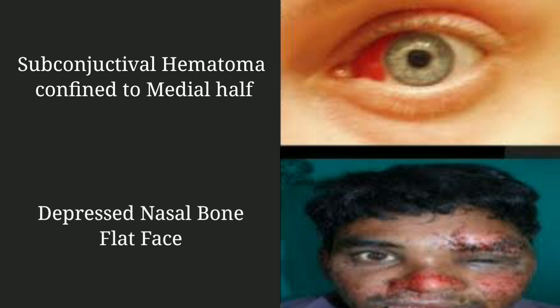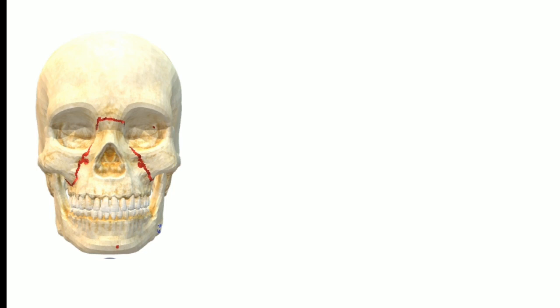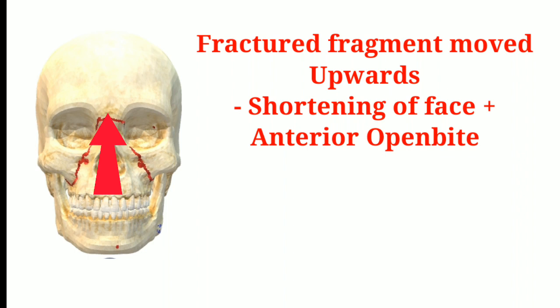On examining the conjunctiva, there will be bilateral subconjunctival hematoma confined to the middle half of the eyes. The nasal bone will be depressed, leading to the appearance of a flat face. Depending on the direction of force, the fractured fragment can move upward and get impacted against the cranial base.